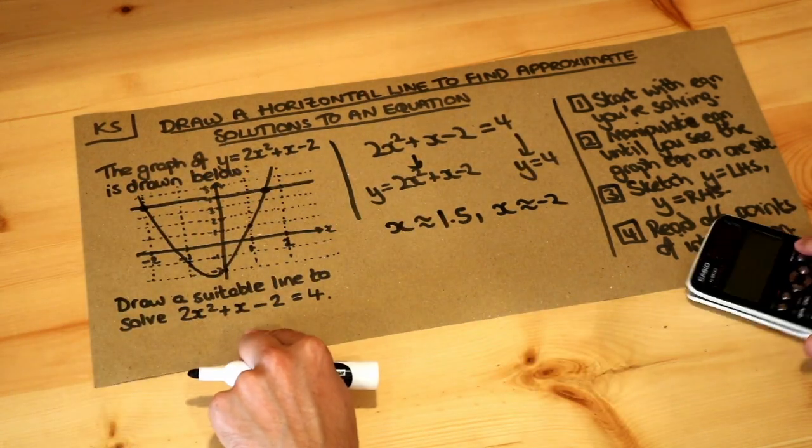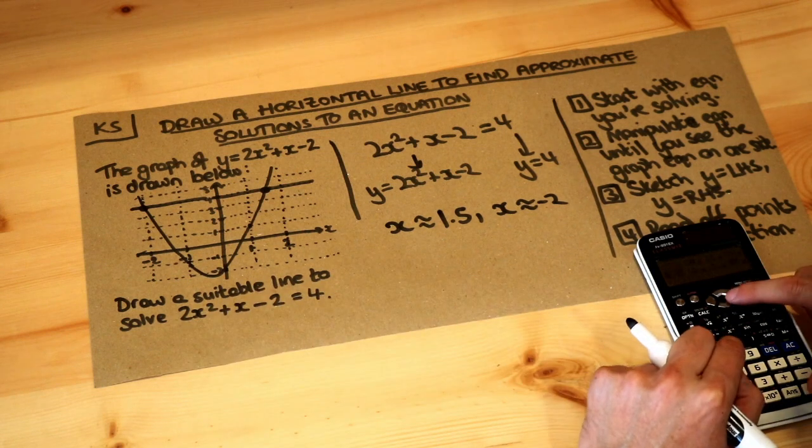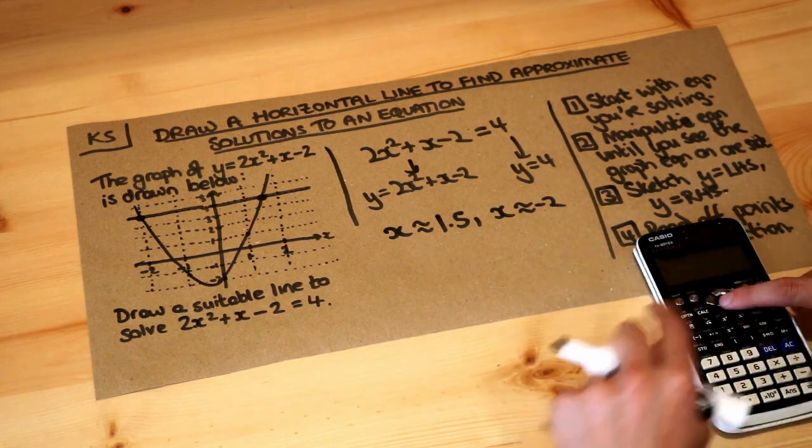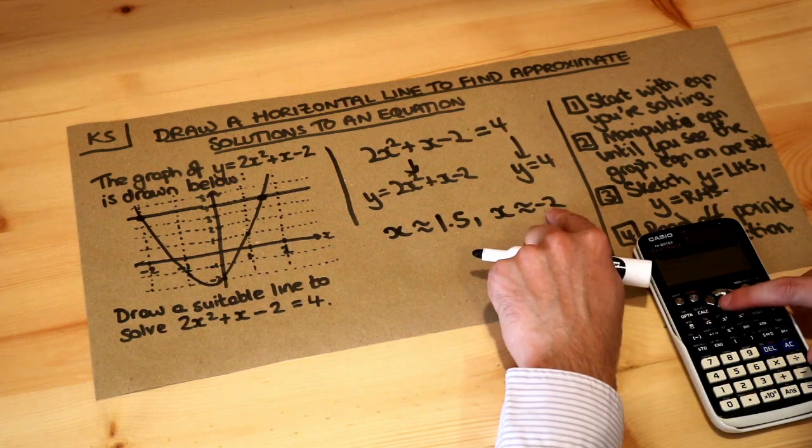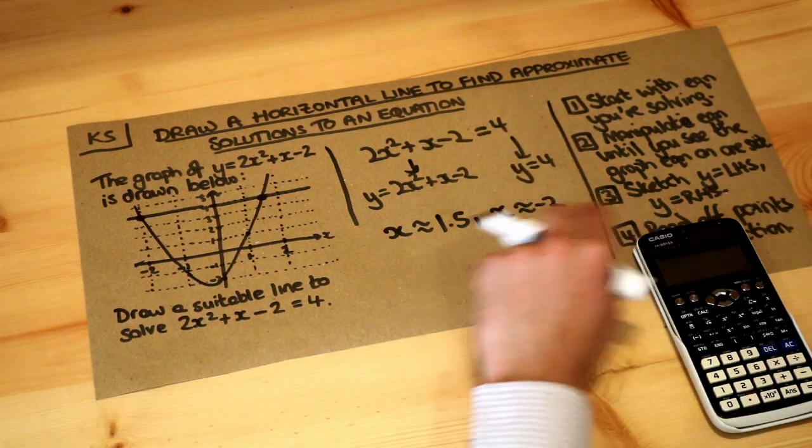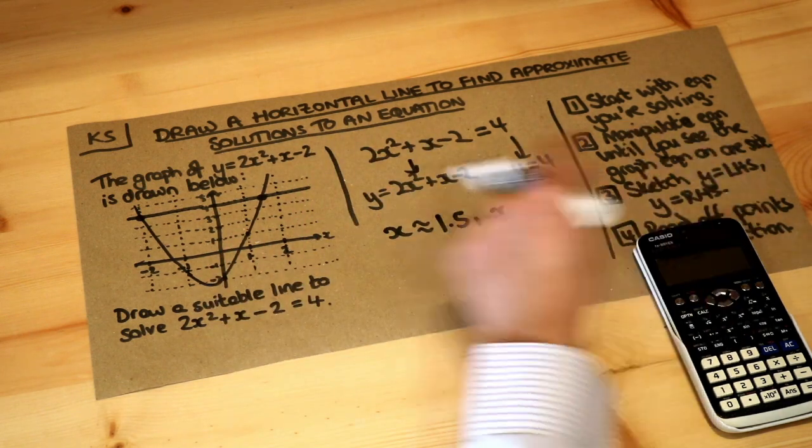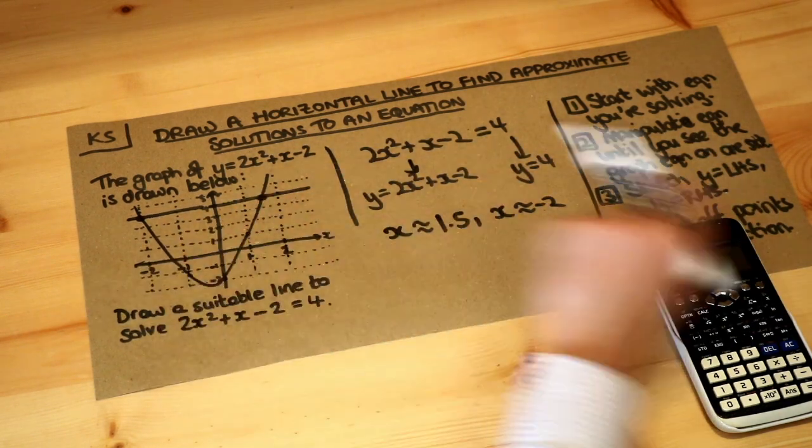And in fact if I was to solve this equation exactly, I can use the quadratic solver on my calculator. It turns out that the exact solutions are in fact 1.5 and minus 2. Ordinarily with these kind of questions it would be some kind of decimal and we're just giving an approximate value based on the value of x we read off the graph.